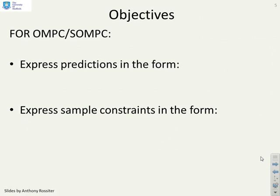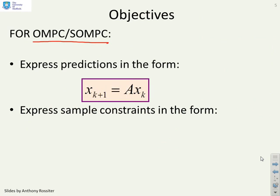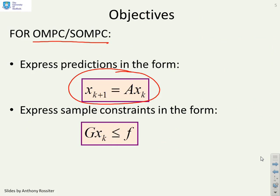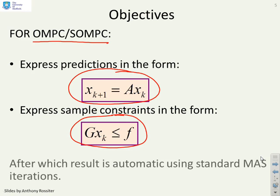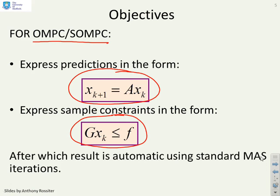Next, we need to look at our OMPC and SOMPC algorithm in this context. We need to express predictions in this form because our maximal admissible set assumed that the state evolved using an equation like this. We also have to express sample constraints in this form. If we can make OMPC look like this, then we can use the standard MAS iterations in order to handle constraints.